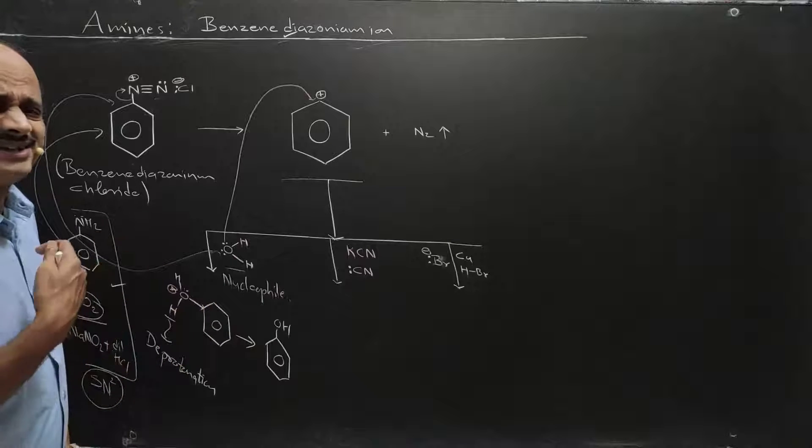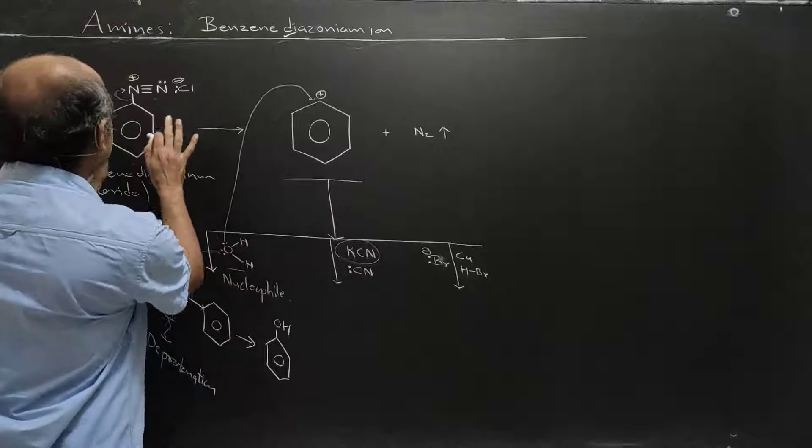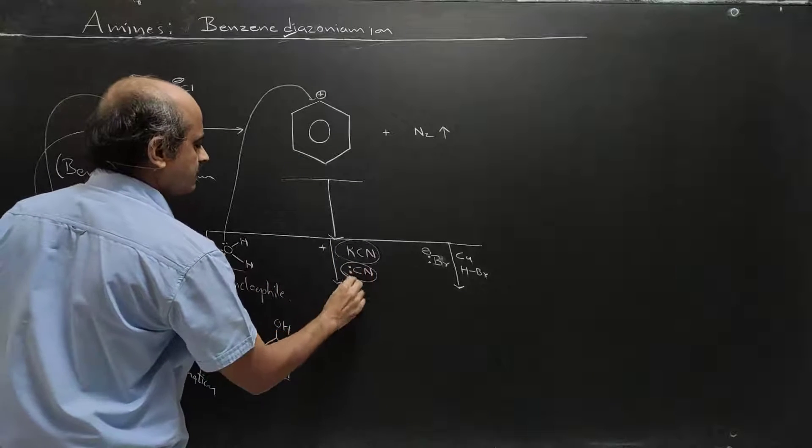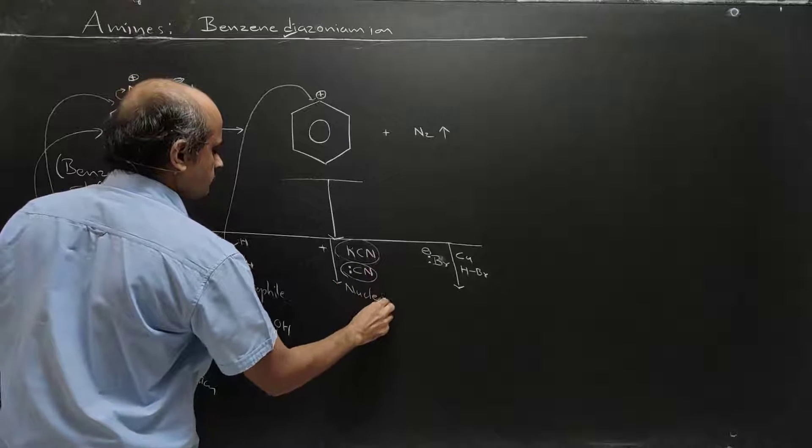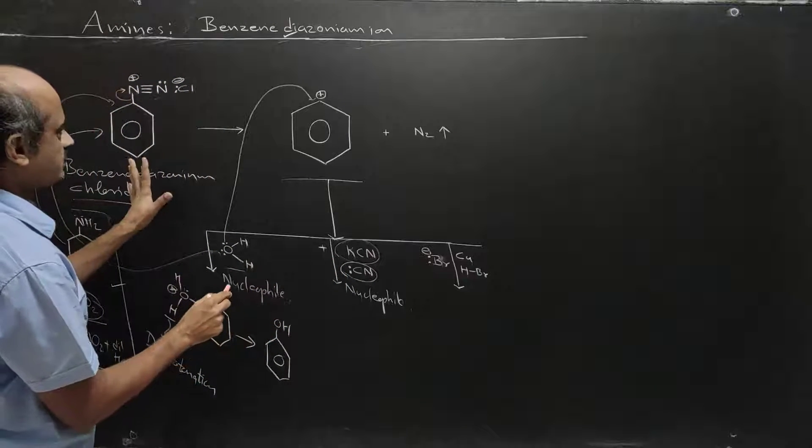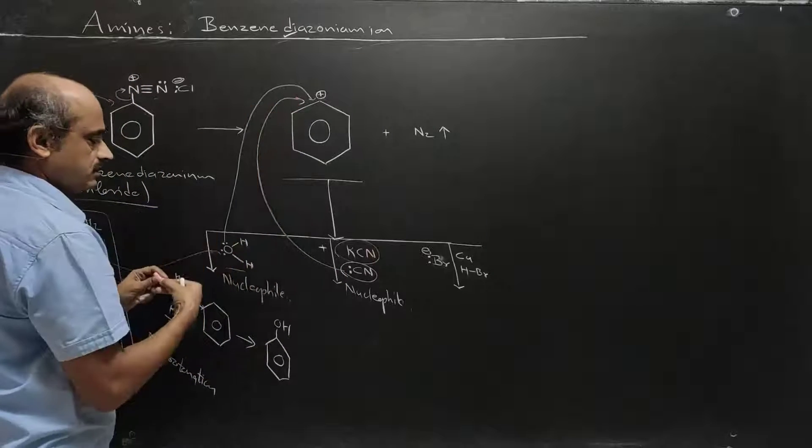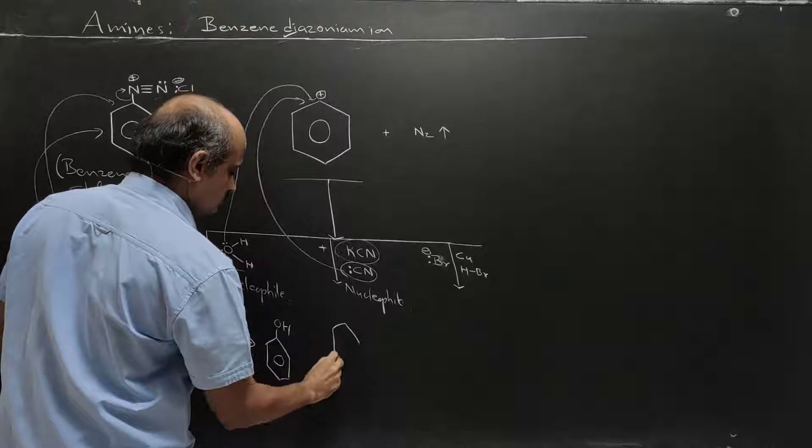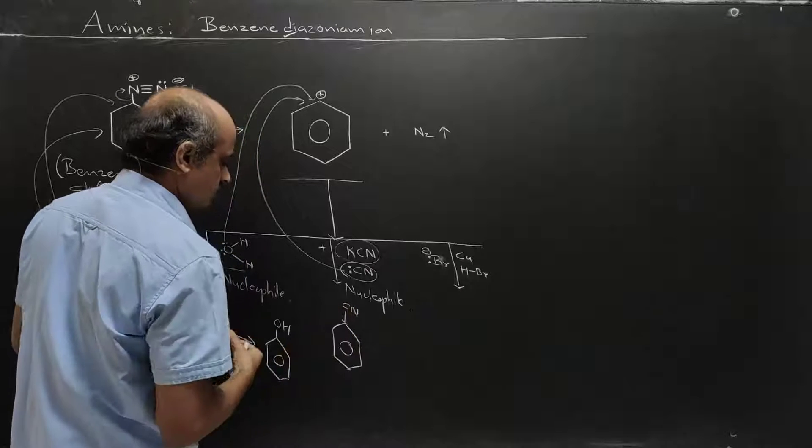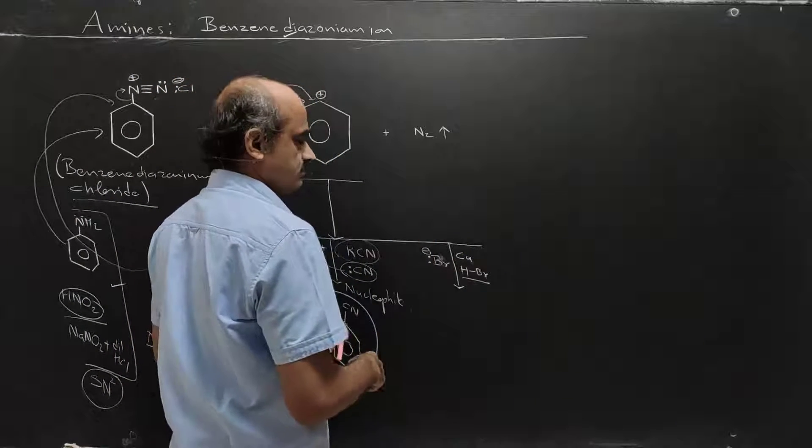Various nucleophiles like cyanide ion, bromide ion can attack in a similar manner. If you react benzene diazonium chloride further with cyanide, the cyanide ion will attack as a nucleophile. The electron pair moves, nitrogen goes out in the form of N2 gas, and cyanobenzene is formed directly.